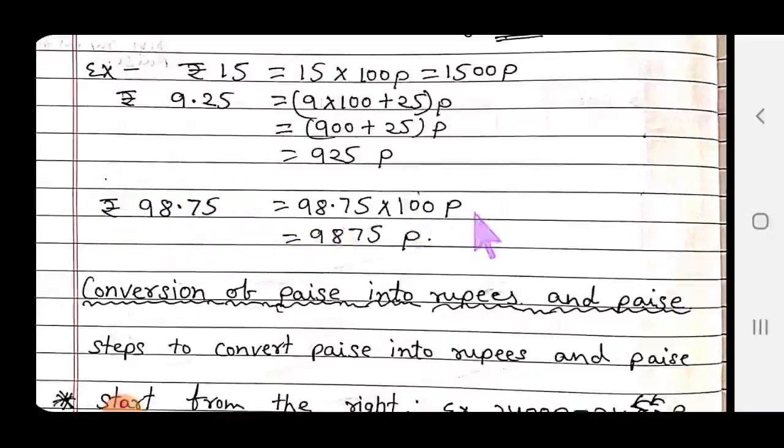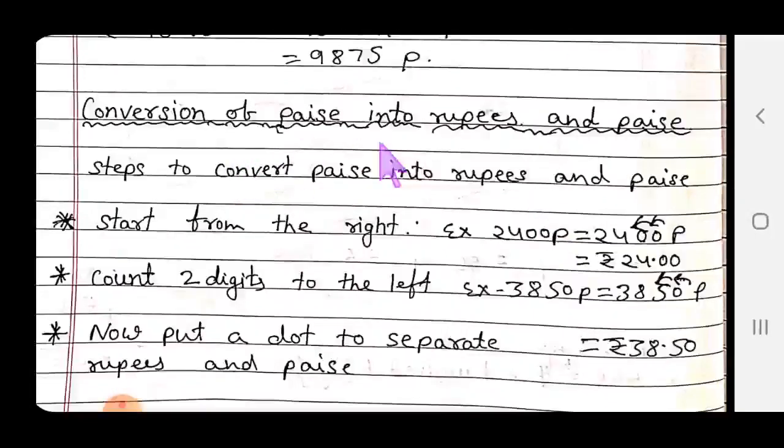Here we have 98 rupees 75 paise to convert into paise. Multiply everything by 100, you will get 9875 paise.